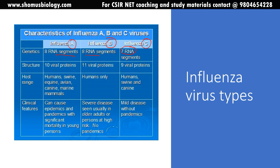For structure: influenza A has 10 viral proteins, B has 11, and C has nine. For host range: influenza A infects humans, swine, avian, canine, and marine mammals; influenza B infects humans only; influenza C infects humans, swine, and canines. Clinically, influenza A can cause epidemics and pandemics with significant mortality. Influenza B causes severe disease in older adults or high-risk persons but has never caused a pandemic. Influenza C causes only mild disease with no pandemic potential — so influenza C is the least concerning, A is the most dangerous, and B is moderate.